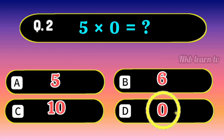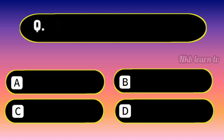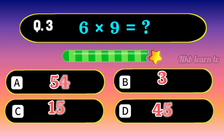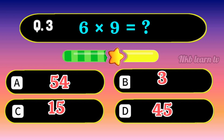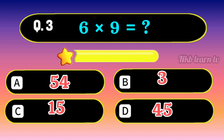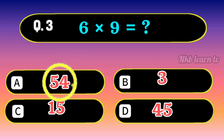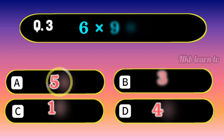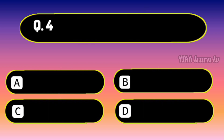Question 2: 5 times 0 equal to? 5 times 0 equal to 0. Question 3: 6 times 9 equal to? 6 times 9 equal to 54.